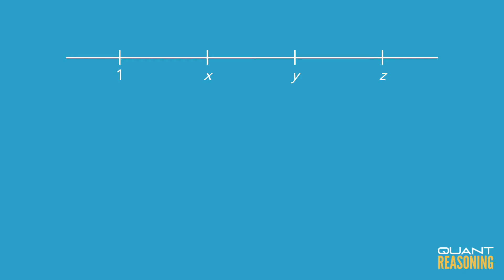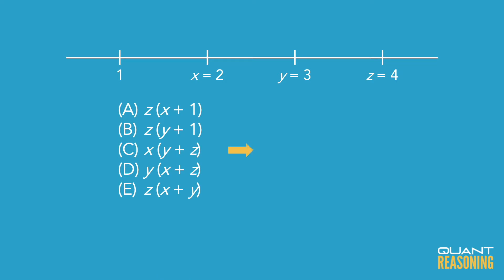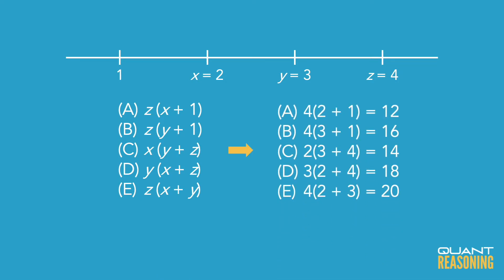We can use that to our advantage — just grab any old numbers. Take z = 4, y = 3, and x = 2, plug those into the five answer choices, and see which one is biggest. This strategy gets us to the right answer, and we could certainly do it in under two minutes, so it's okay.